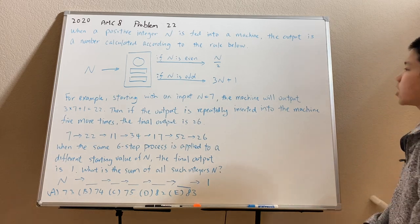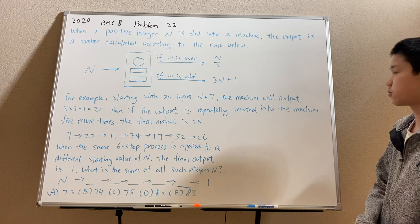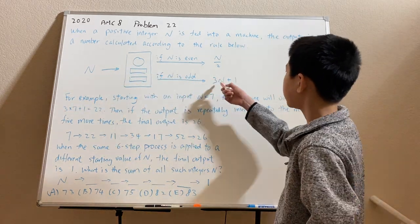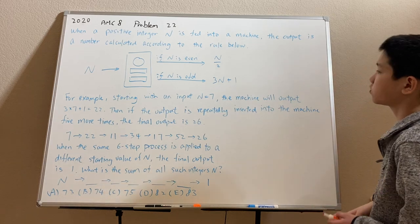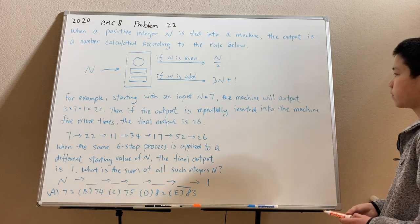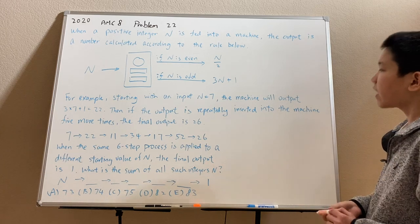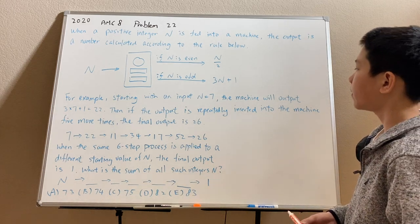So for example, starting with an input n equals 7, the machine will output 3 times 7 plus 1. The 7 here is odd, so you want to follow the rule 3n plus 1. So 3 times 7 plus 1 is 22. This rule is repeatedly applied in the machine five more times to get a final output of 26.